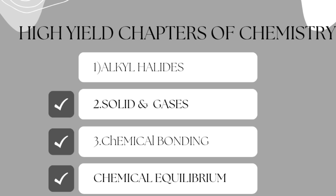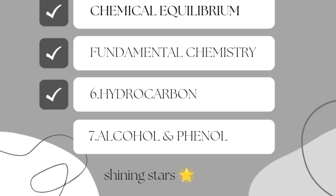Now we are talking about the high yield chapters of chemistry: Alkyl Halides, Solids and Gases, Chemical Bonding, Chemical Equilibrium, Alcohol, and Phenol. These all chapters are most important. Reactions should be on your fingertips. You should know which catalysts are being used, which chemical reaction is occurring, and what the product will become. Please cover the reactions very well.